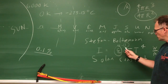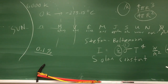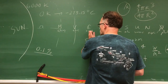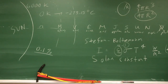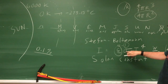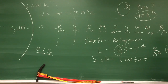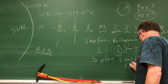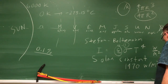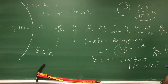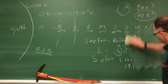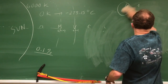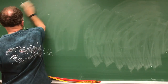We know the average distance from the Earth to the sun, so we plug that in for r, square it, multiply by 4 pi, multiply by the Boltzmann constant, and we know the temperature of the sun is 6,000 Kelvin. So we can compute the solar constant, and it comes out to about 1,470 watts per square meter at the Earth. That's the energy at the top of the atmosphere of the Earth.